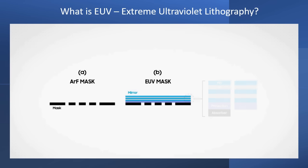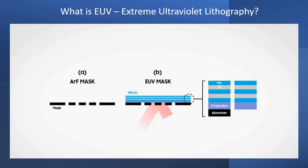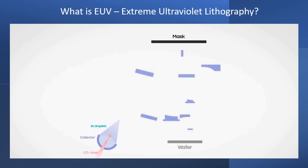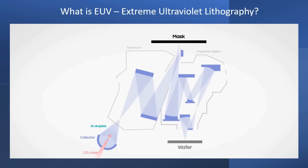Unlike a conventional mask where areas either transmit or block light, the mask for the EUV process is made up of areas that either reflect or absorb light. To summarize: first, EUV light is generated by heating tin with a CO2 laser and focusing the plasma with mirrors. The EUV light is then reflected through mirrors to the mask. The light pattern is then focused and reflected multiple times to reduce the pattern size before it arrives at the photoresist on the wafer.